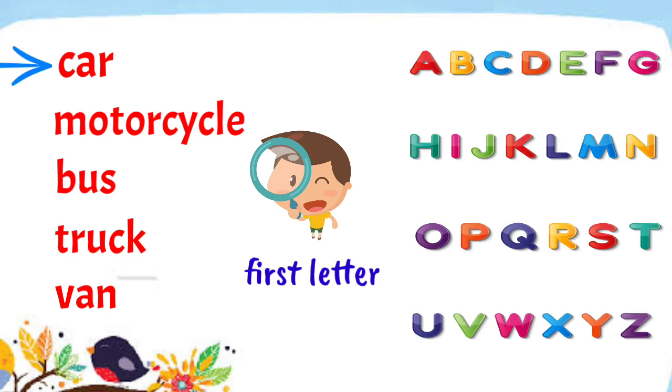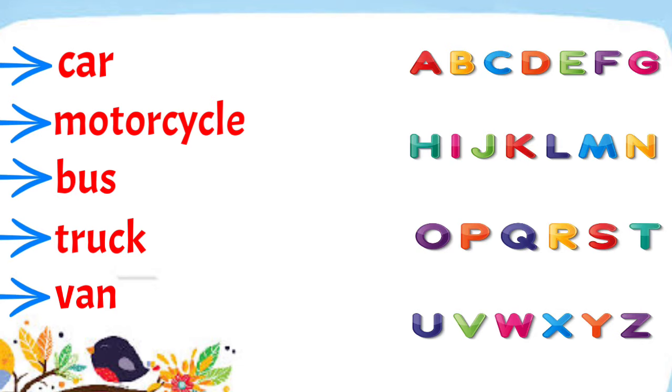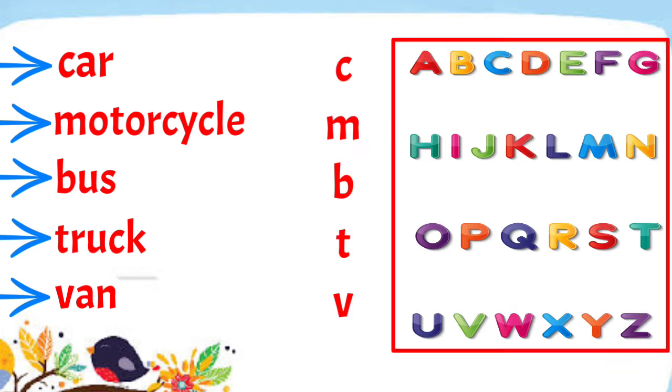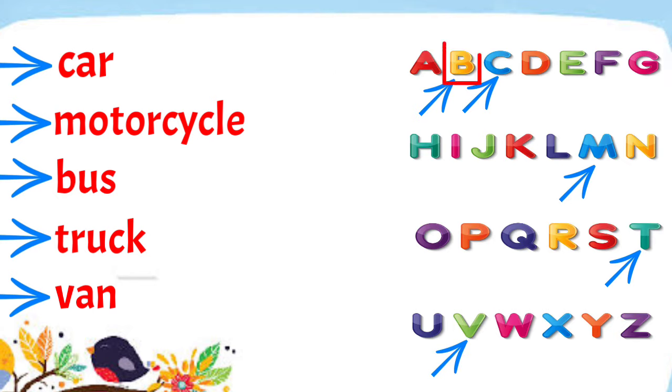C for car, M for motorcycle, B for bus, T for truck, and V for van. Next, let us identify which of these letters comes first in the alphabet. Is it C, M, B, T, or V? It is B. So let us put bus first.